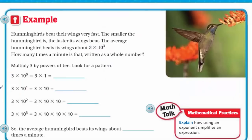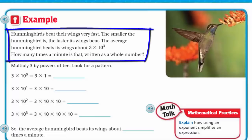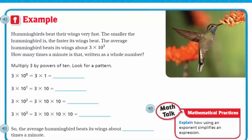Woo-hoo, let's move on. Now we get our real world problem, it's a hummingbird. Hummingbirds beat their wings very fast. The smaller the hummingbird is, the faster its wings beat. I did not know that. The average hummingbird beats its wings about 3 times 10 raised to the third power. How many times a minute is that written as a whole number? Multiply 3 by powers of 10. Look for a pattern.